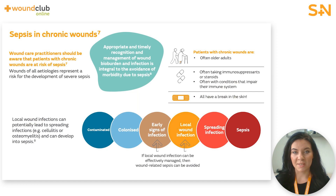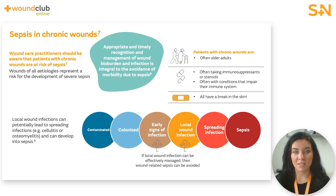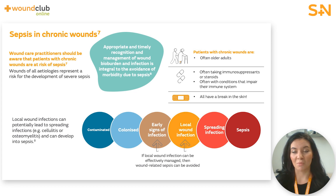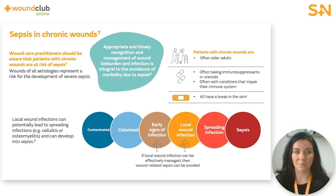Wound care practitioners should be aware that patients with any type of wound, including chronic wounds, are at risk of sepsis. If we bring to mind a typical patient with a chronic wound, we would normally envisage an older person, possibly frail, who is often on a lot of medications — some of which interfere with wound healing — and who often has many comorbidities that can interfere with their immune system. They also have a break in the skin. These are all factors for an increased risk of sepsis.